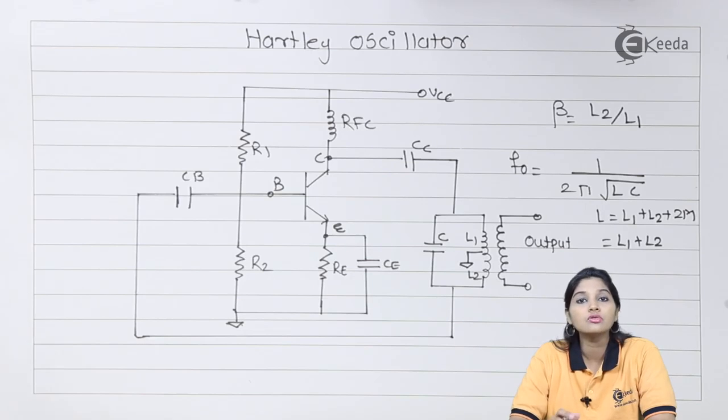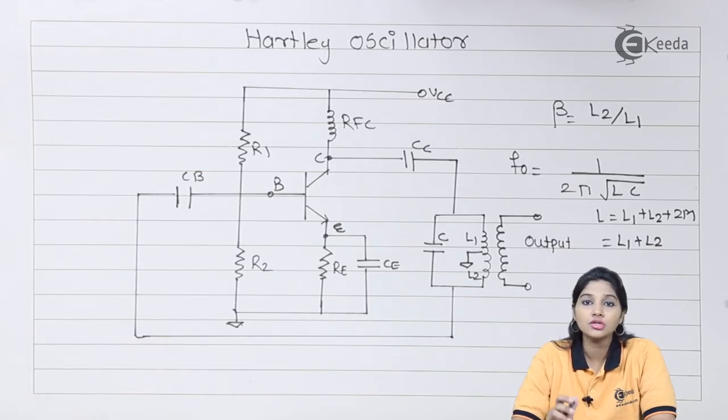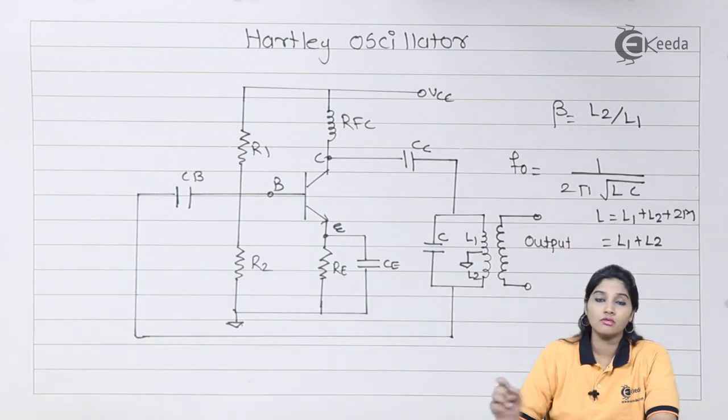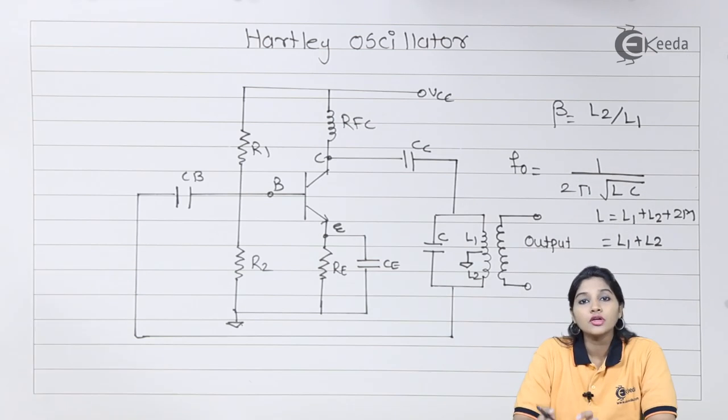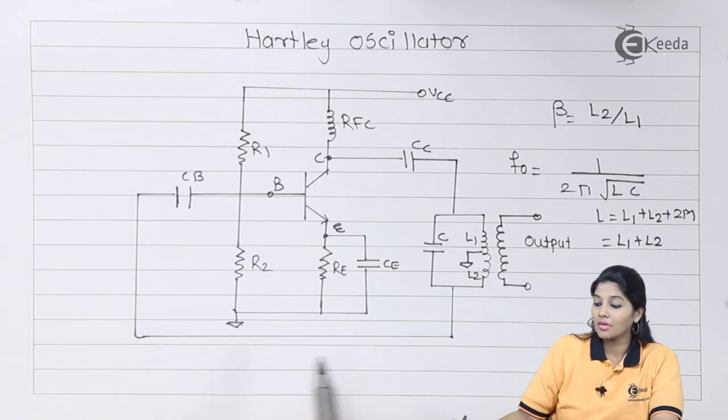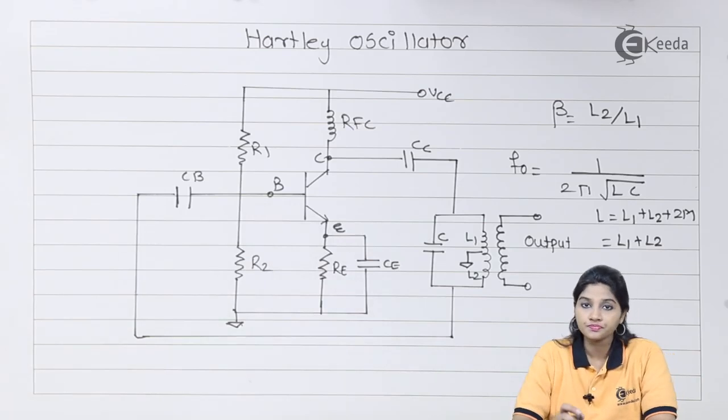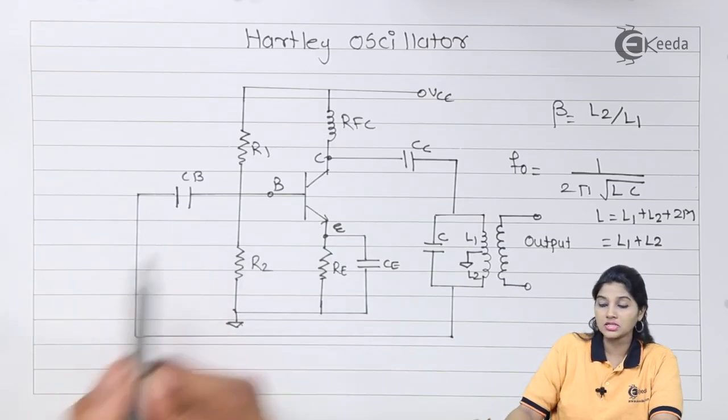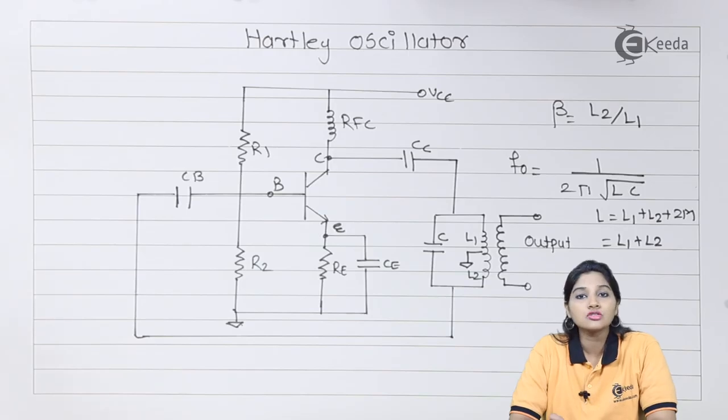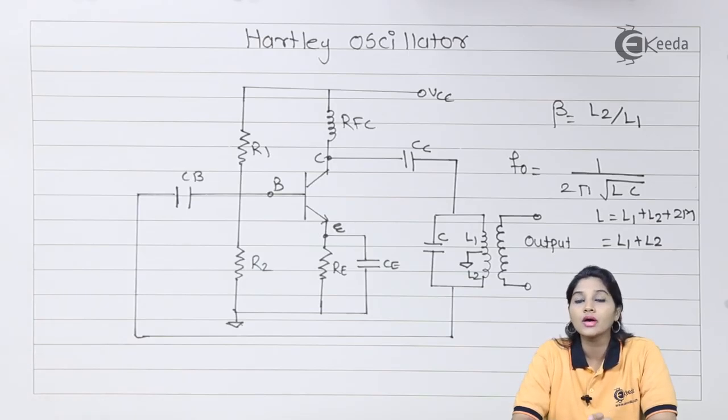In case of feedback network, we need to consider the feedback gain factor beta, and here as two coils are used, the value of beta is given by L2 by L1. The phase shifted 180 degree signal is applied to the base of transistor through capacitor CB. When transistor is used as an amplifier, it provides an additional phase shift of 180 degrees.